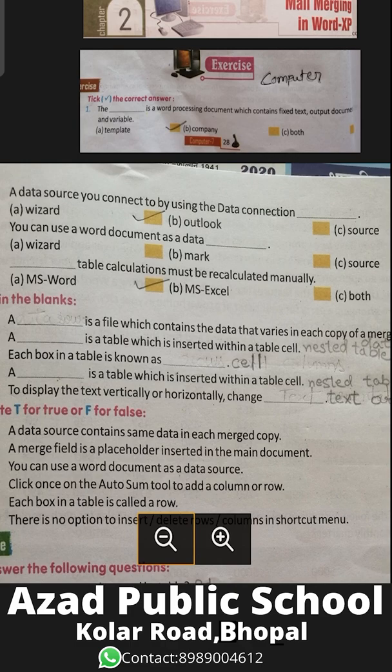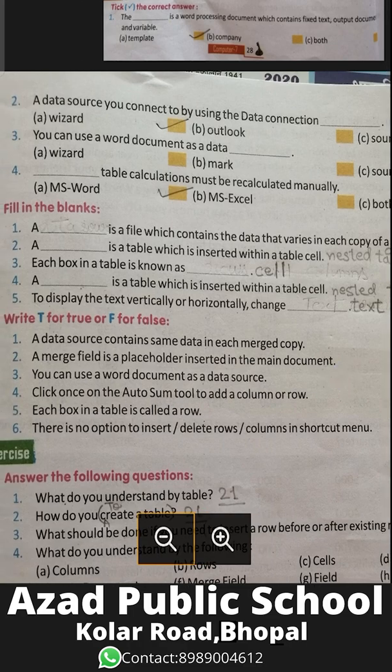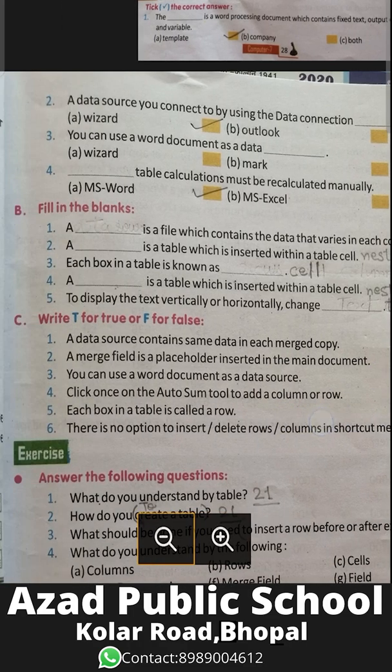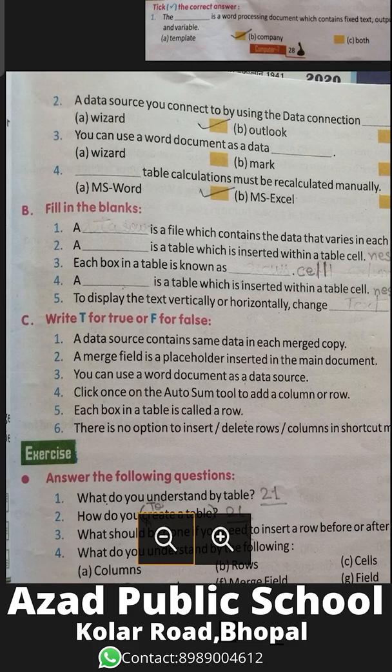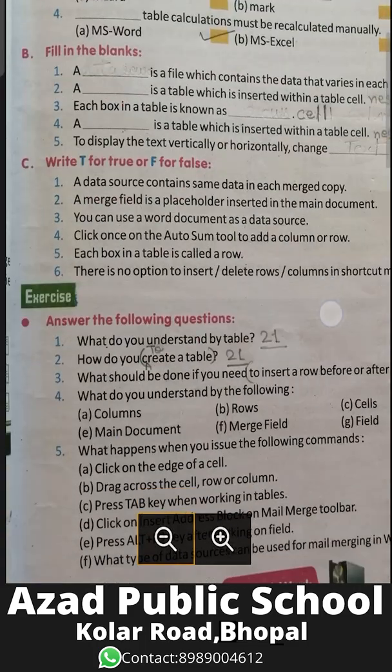The first one: a word processing document contains fixed text, an output document, and variable data. What is the template? A data source connected to by using the Data Connection Wizard.